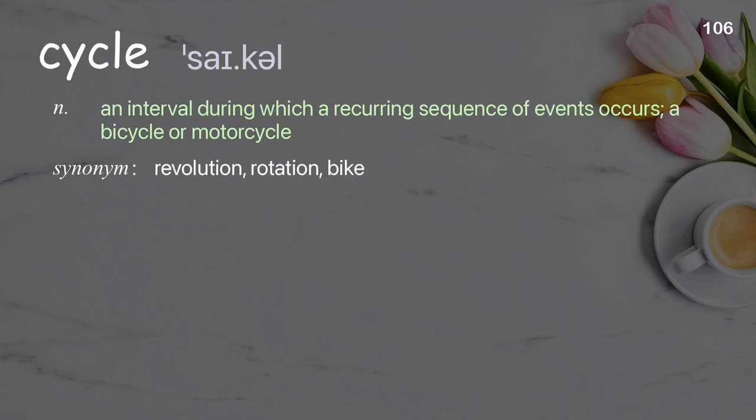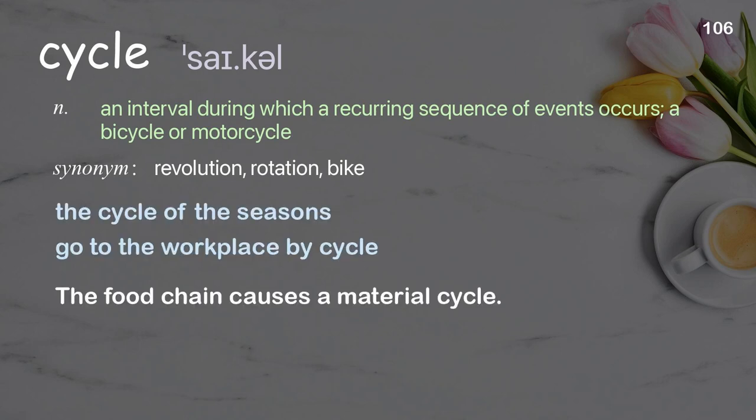Cycle. An interval during which a recurring sequence of events occurs; also a bicycle or motorcycle. Examples: the cycle of the seasons, go to the workplace by cycle. The food chain causes a material cycle.